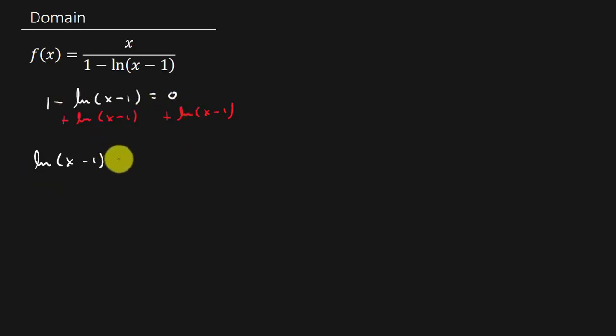I'm just going to write the natural log on the left hand side. So you would actually get 1 equals natural log x minus 1 because those would go out. And so I just swap sides.